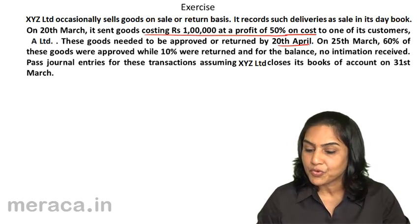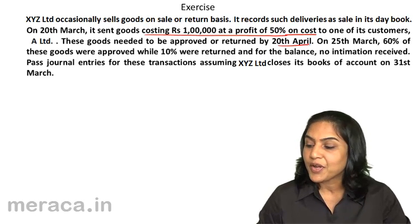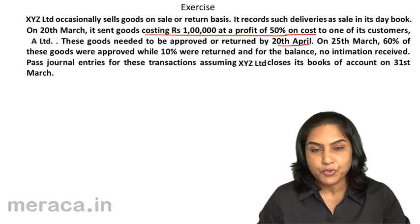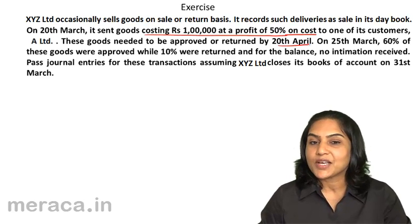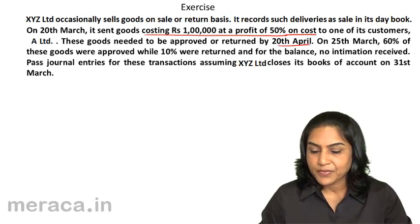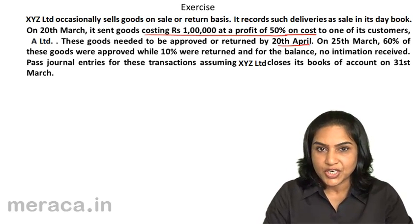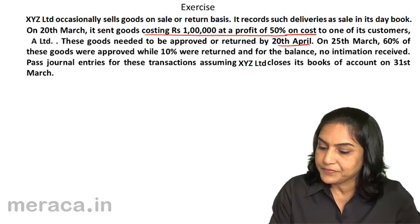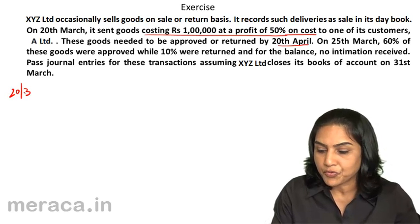We have goods being sent on approval on 20th March, goods being returned and approved on 25th April, and goods still lying with the customer as at 31st March. Let us pass the entries chronologically, one by one. The first entry is on 20th March, when goods are sent on approval.